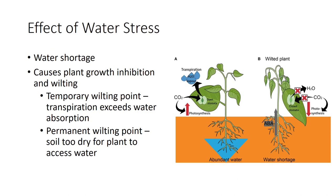Water stress is caused by a shortage of water in plant tissue. Stress occurs even at moisture levels that do not cause wilting, because as soil dries, it becomes increasingly difficult for a plant to absorb moisture. As the plant becomes deficient in water, guard cells begin to close stomata, slowing exchange of oxygen and carbon dioxide. Reduced exchange of the two gases slows photosynthesis, and plant growth is inhibited.